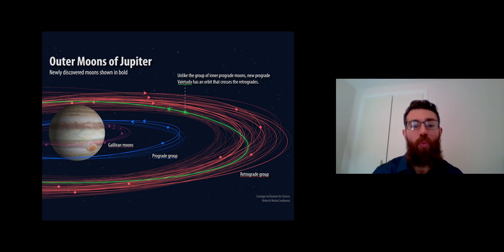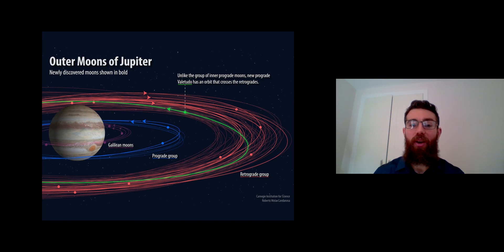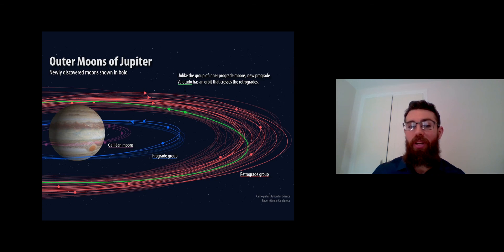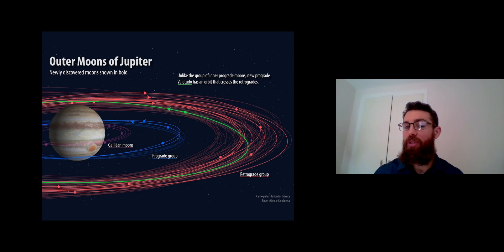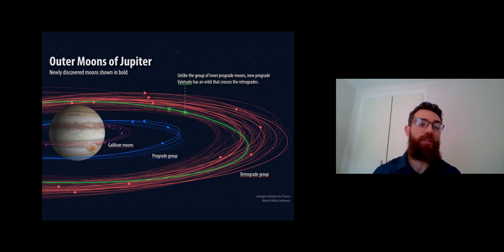It's worth noting that with Jupiter, there is actually a prograde moon — shown in green — within the retrograde group. This means you have moons orbiting in different directions in the same area, which suggests there is going to be a significant collision at some point in the future.